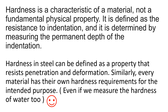Take the example of cast iron and mild steel — cast iron is harder than mild steel, so cast iron is more brittle. If you hammer on cast iron there is a chance it can break, but mild steel will not break because its hardness level is lower. Hardness is determined by measuring the permanent depth of the indent; less penetration and less deformation means higher hardness value.